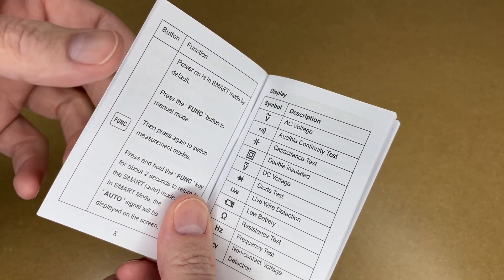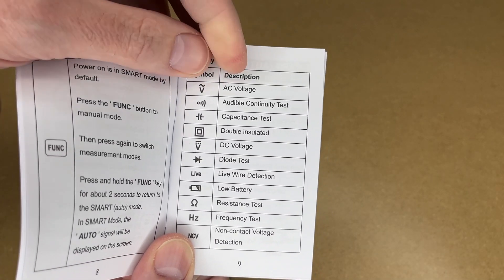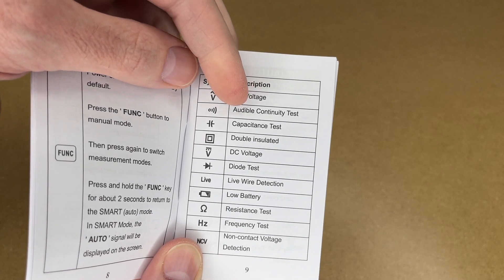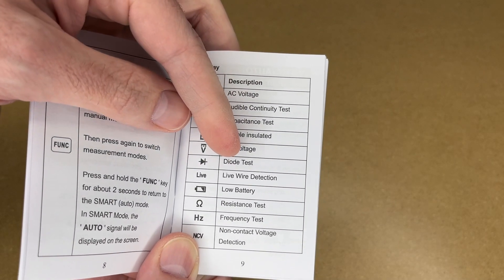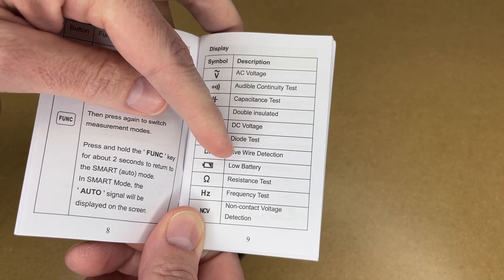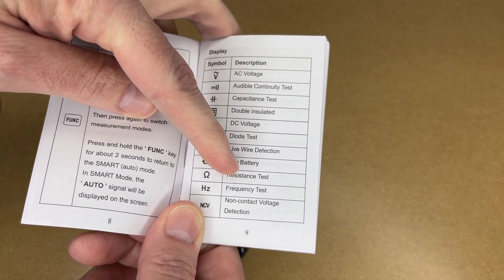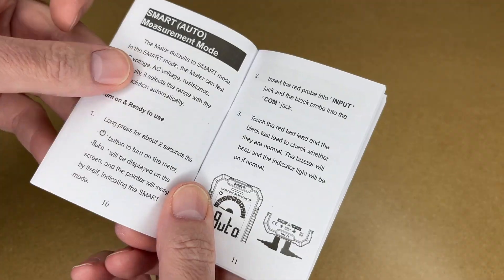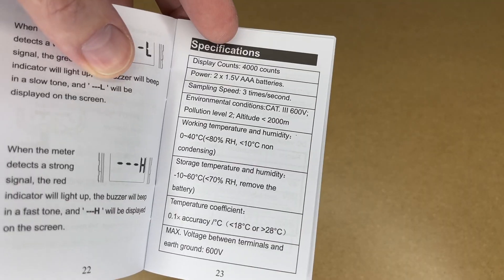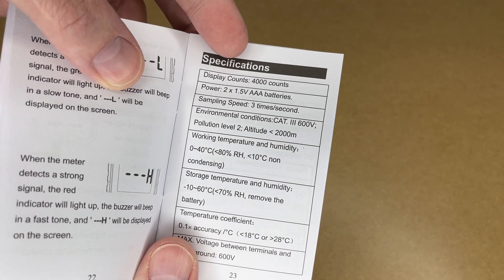Here are the different features: AC voltage, audible continuity test, capacitance test, double insulated, DC voltage, diode test, live wire detection, low battery, resistance test, frequency test, non-contact voltage detection. This talks about how to use it.